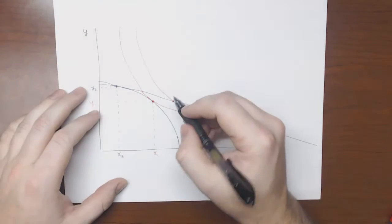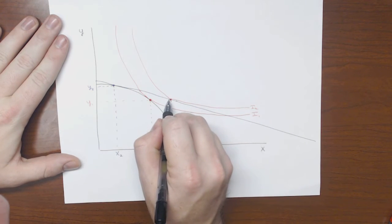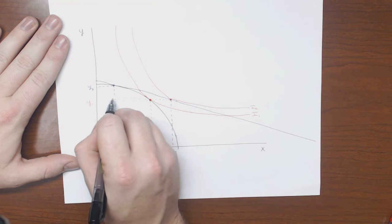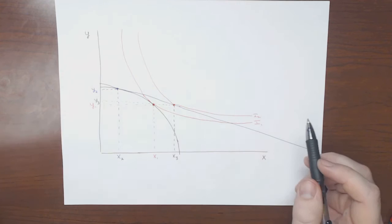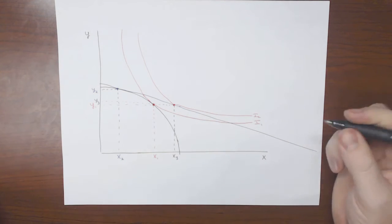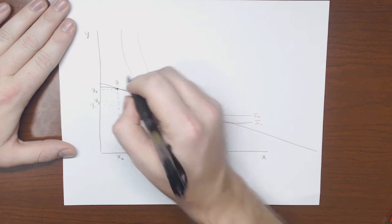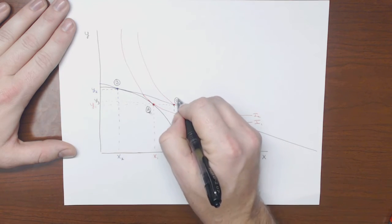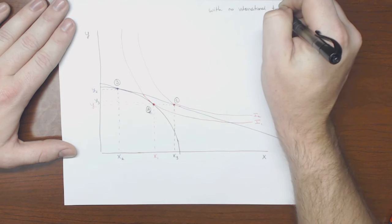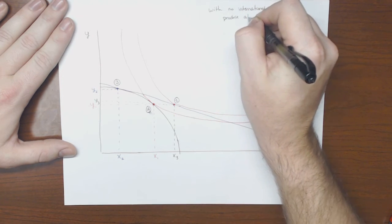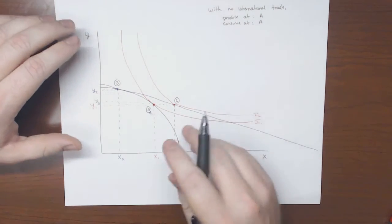So now I'm going to use black again to come straight down. X3. And if I had drawn this more carefully, it would be easier to tell that this point is higher on y than this point. And so what we can see is that what's going to happen is initially we were here at point A. We've got point B and we've got point C. So with no international trade, we produce at A and we consume at A because we can't trade with anyone.